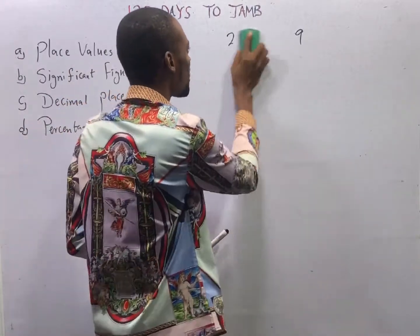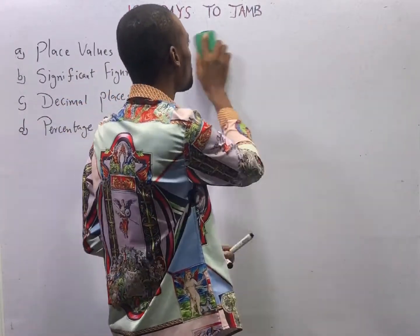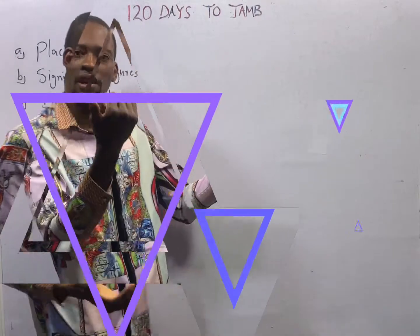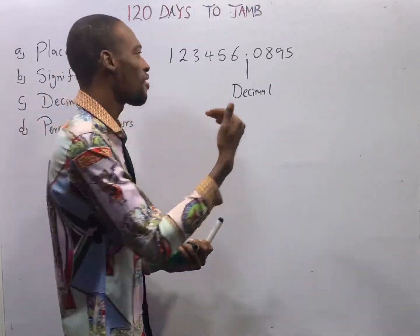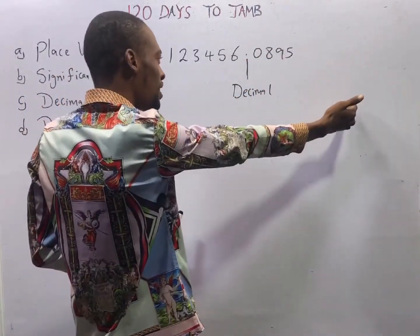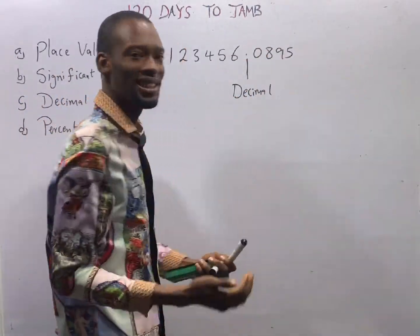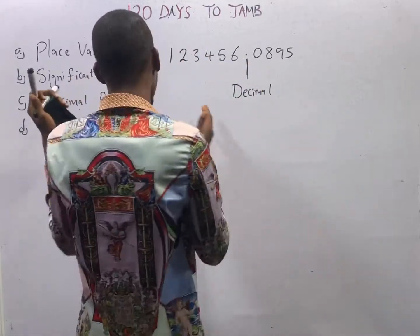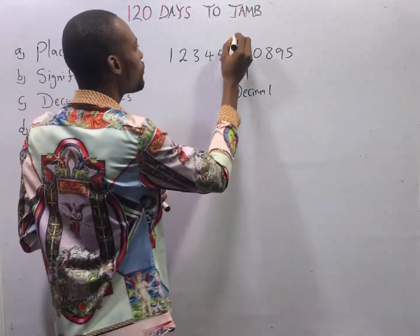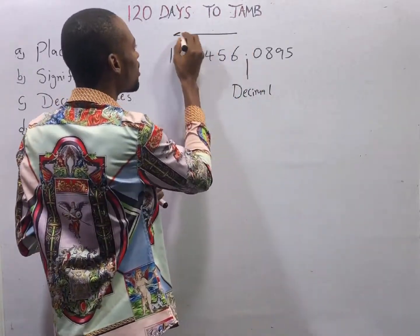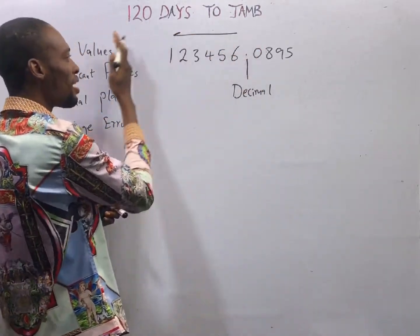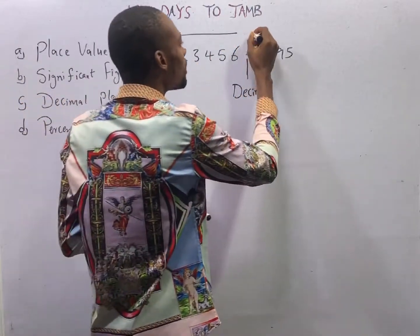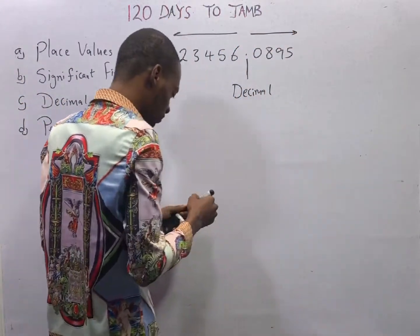Now, let's see various numbers and their place values — digits to the right of the decimal point and digits to the left of the decimal point. When you move to the left, the digits are bigger; when you move to the right, they get smaller.